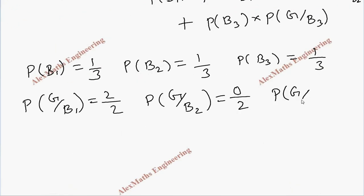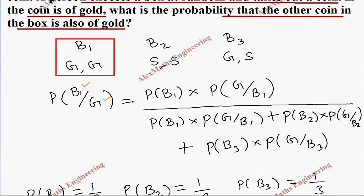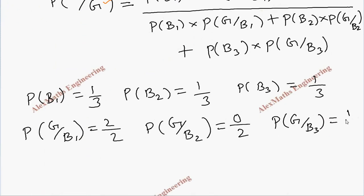And P of G by B3. There are two coins in that. One gold and one silver. So, getting gold is 1 by 2.